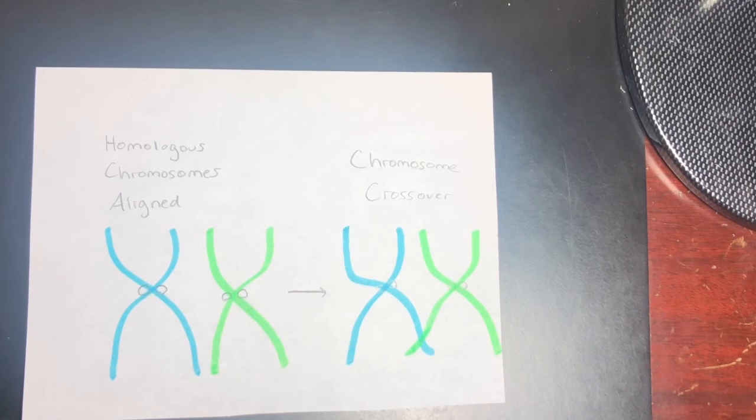An example of this is the human oocyte, which are the cells that give rise to the egg. These have an average of two to three crossover events occurring within each bivalent.